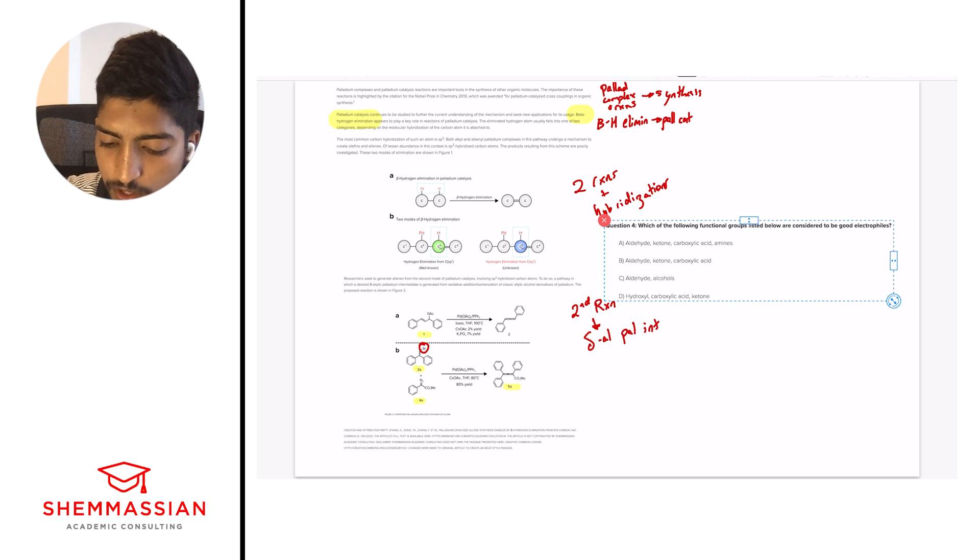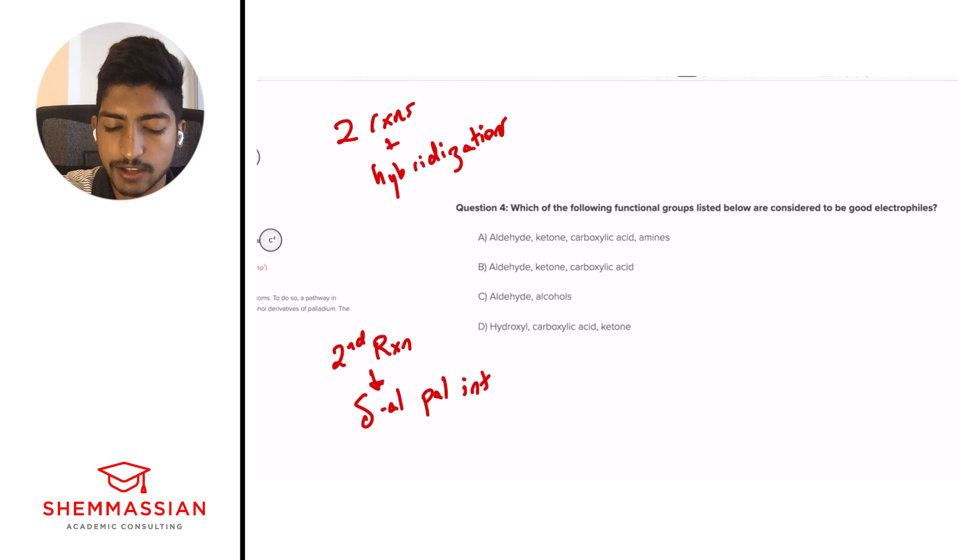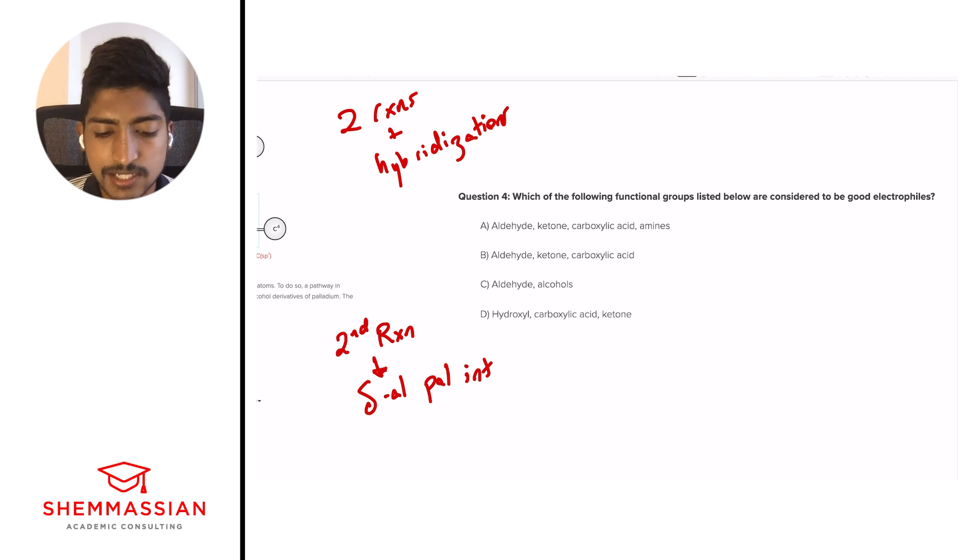Question four. All right. Great. Question number 3. Which of the following functional groups listed below are considered to be good electrophiles? A, aldehyde ketone carboxylic acid amines. B, aldehyde ketone carboxylic acid. C, aldehyde alcohols. D, hydroxyl carboxylic acid and ketone. All right. So we always want to focus on what the question is asking. And we're looking for electrophiles. This is very important. And so we should have an understanding of what electrophiles are, right? There's something that want to be attacked, right? And can stabilize and attack. And so right away, we can eliminate hydroxyl acids, carboxylic acids, ketones, because a hydroxyl group is not really a great electrophile. What are great electrophiles are the carboxylic acid and ketone part of this. And so we have this part and this part that we like. And again, if we have a hydroxyl and an alcohol, we don't want that to be attacked. But we do want an aldehyde. Aldehyde is a great electrophile.